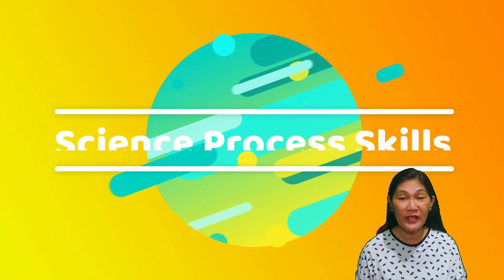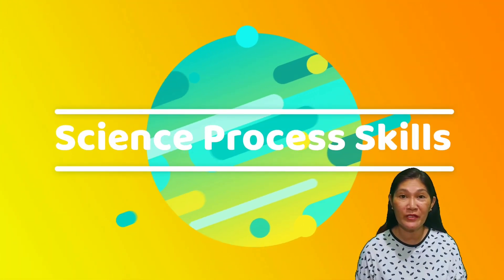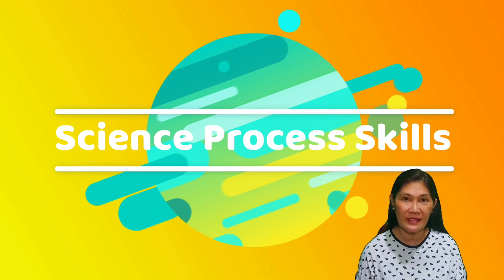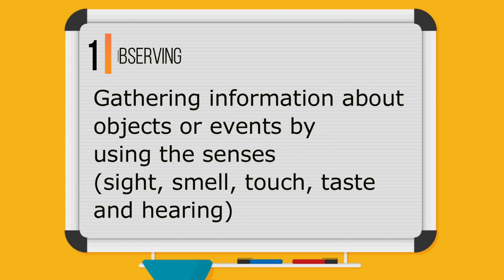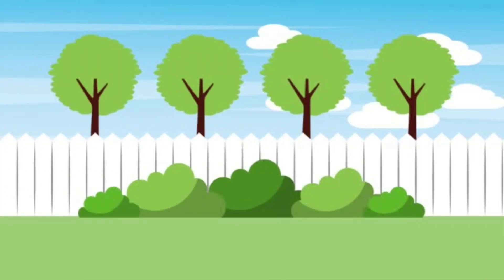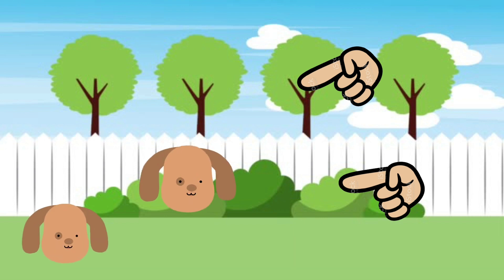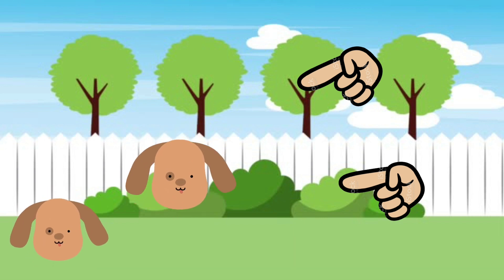Today, we're going to learn about the different science process skills. The first science process skill is observing. Observing is gathering information about objects or events by using the senses. Example: those are puppies.